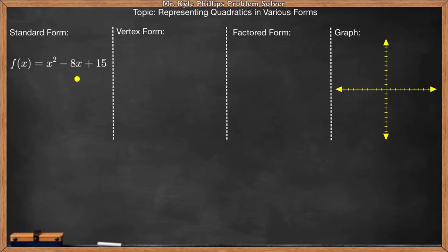Here we have it in standard form. So this is the traditional ax squared plus bx plus c that you may have already seen. Vertex form follows a little bit different format. It looks like this.